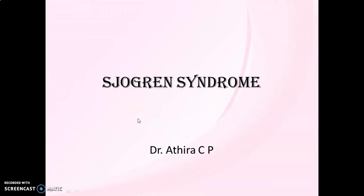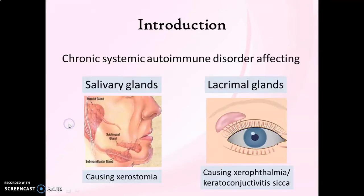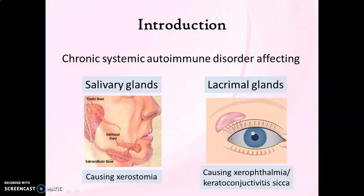Hello everyone. Welcome to e-classes by Dr. Aghira. This video is on Sjögren's syndrome. Sjögren's syndrome is a chronic systemic autoimmune disorder that principally affects salivary glands and lacrimal glands, and it results in xerostomia or dry mouth and xerophthalmia or dry eyes. The effects on eyes can also be termed as keratoconjunctivitis sicca, where the word 'sica' means dryness.